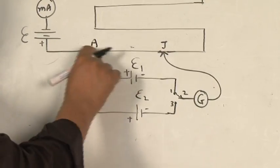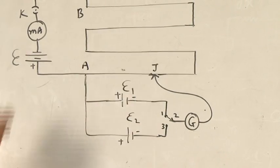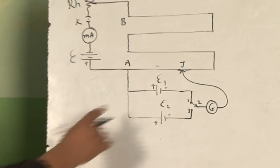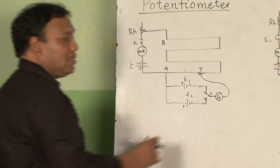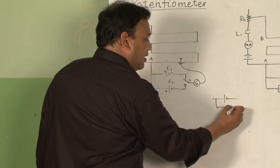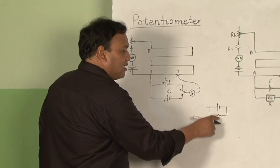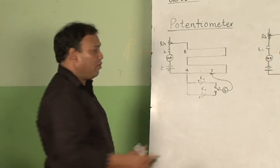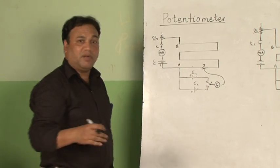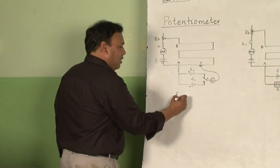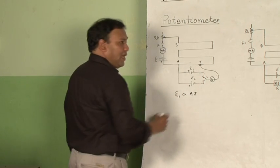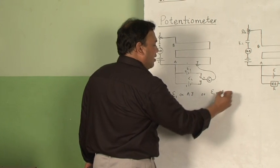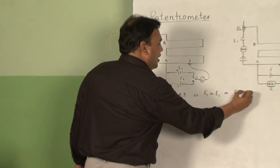Slide the jockey from A to B — at one point, say J, the galvanometer shows no deflection. When no current is drawn from the cell, the potential drop between its terminals equals its EMF. Because of this, E1 is directly proportional to the length AJ, so E1 equals KL1.